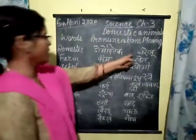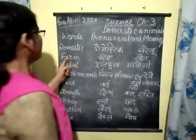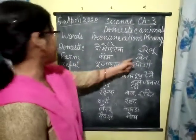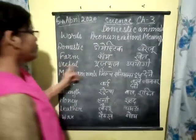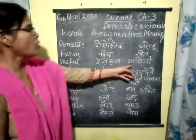Domestic means Gharelu. Farm means Khet. Useful means Upyogi.